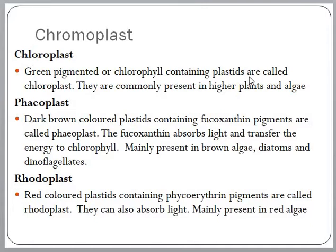Phaioplasts are dark brown colored plastids, and the color is due to the presence of the pigment fucoxanthine. Fucoxanthine can absorb light and transfer the energy to chlorophyll. They are mainly present in brown algae, diatoms, and dinoflagellates. The third group of chromoplasts is rhodoplasts. They are red colored plastids that contain the pigment phycoerythrin. They can absorb light and are mainly present in red algae.